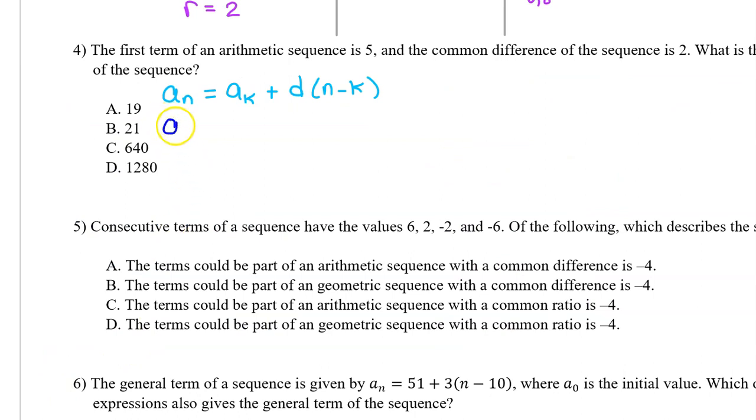Let's write an expression for a_n, the nth term of this arithmetic sequence. We are told that the first term is 5. So, in other words, we are given a_1, and we will fill in 5 on the next step. We are also told that the common difference is 2. So, let's put in 2 for d. n minus k will become n minus 1, because this is the k.